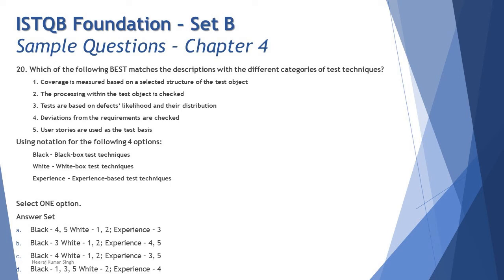Moving to question number 20: 'Which of the following best matches the descriptions with the different categories of test techniques?' The five descriptions are: (1) coverage is measured based on selected structure of the test object, (2) the processing within the test object is checked, (3) tests are based on defects' likelihood and their distribution, (4) deviations from requirements are checked, (5) user stories are used as a test basis. You must classify these into black box, white box, and experience-based techniques — covered in Section 4.1 of Chapter 4.